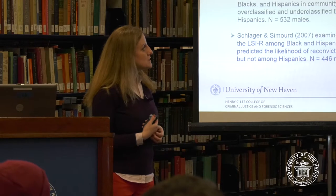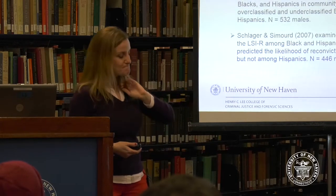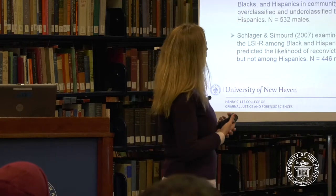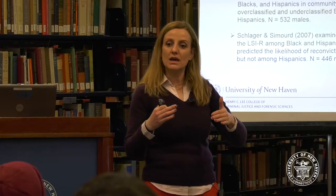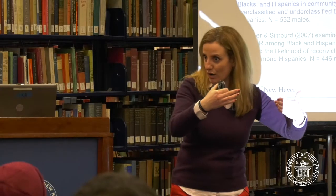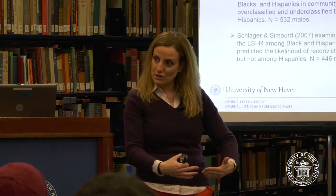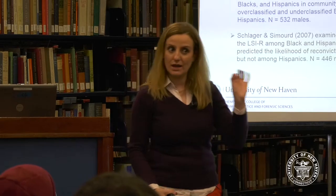The first was in 2006 by Weidecker, who examined predictive validity when it comes to race — whites, blacks, and Hispanics — at a work release facility. He found that the LSI overclassified and underclassified African Americans more than whites and Hispanics depending on the item, meaning they would be classified as higher risk than they actually were on certain items and lower risk on others. However, his sample was quite small — only 532 males.